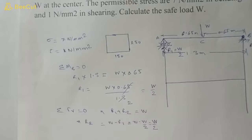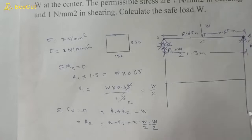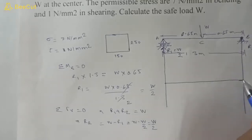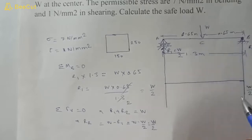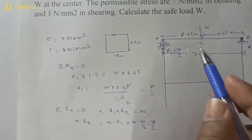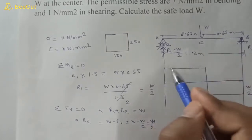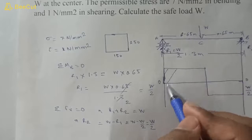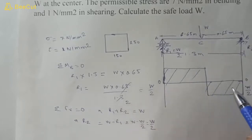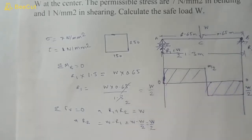Now we build the shear force diagram. Starting from the left, R2 is W/2, so we draw W/2 there. From B to C there is no other force, so it remains constant. At C, load W is applied, and it remains constant to the right end. The maximum shear force in this beam is W/2.